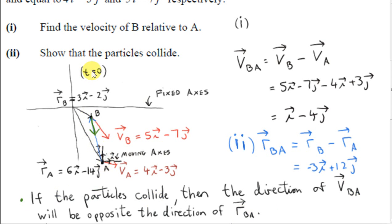So as time goes on, initially the timer is zero. As time goes on, from A's perspective, B will appear to move along the direction of the relative velocity vector VBA. So let's see that that's true.